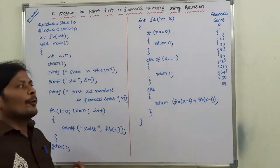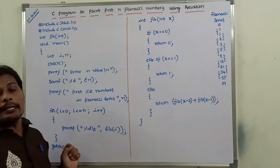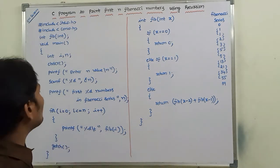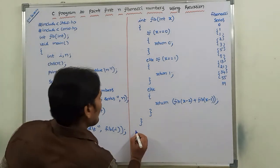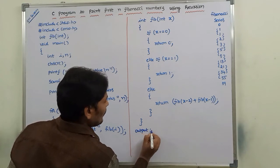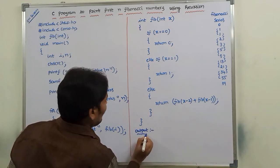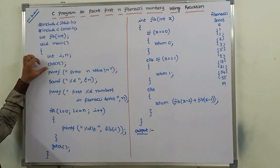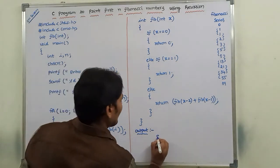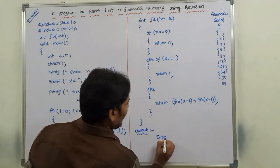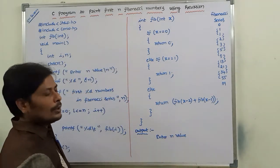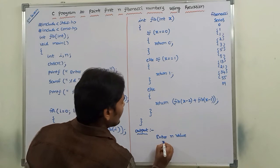This is the program to print the first n Fibonacci numbers using recursion. Now we also need to write the output. The program displays "Enter n value" and reads n from the keyboard. We will use n = 7 as an example.